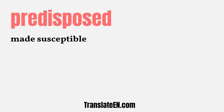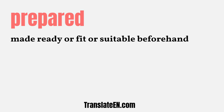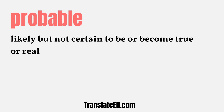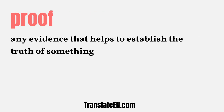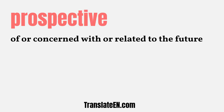Predisposed: made susceptible. Prepared: made ready or fit or suitable beforehand. Probable: likely but not certain to be or become true or real. Progressive: favoring or promoting modern or innovative ideas. Proof: any evidence that helps to establish the truth of something. Prospective: of or concerned with or related to the future.